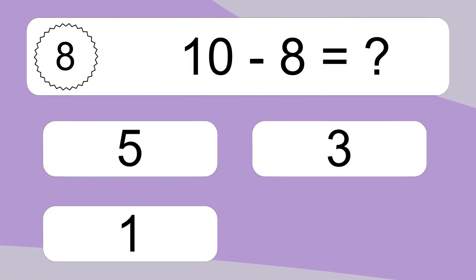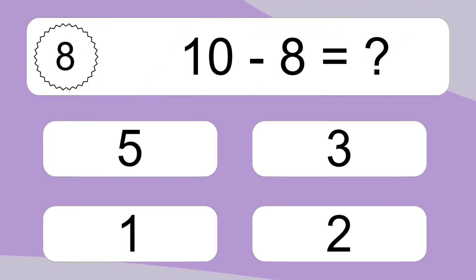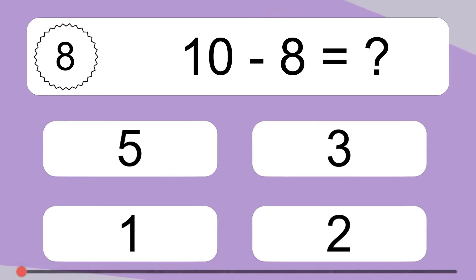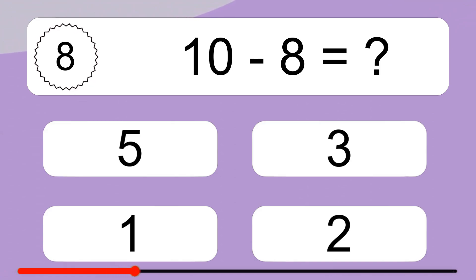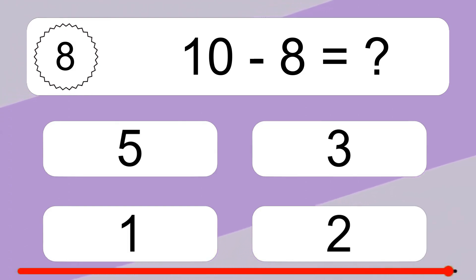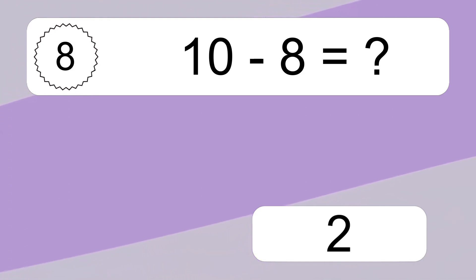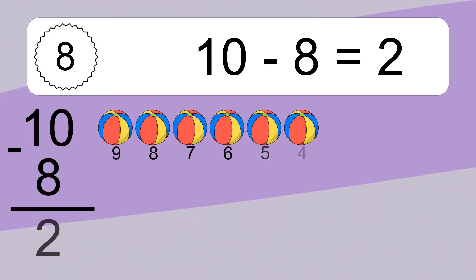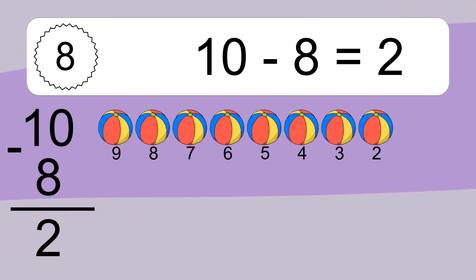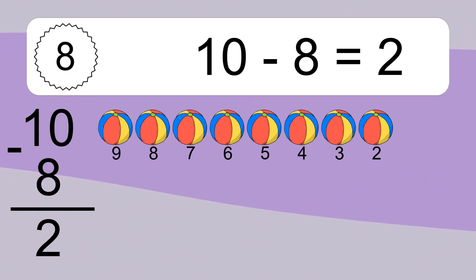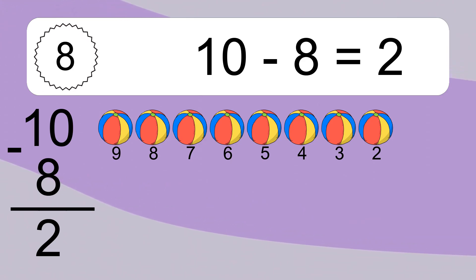5 minus 3 equals what? 10 minus 8 equals 2. Let's count it. 9, 8, 7, 6, 5, 4, 3, 2.